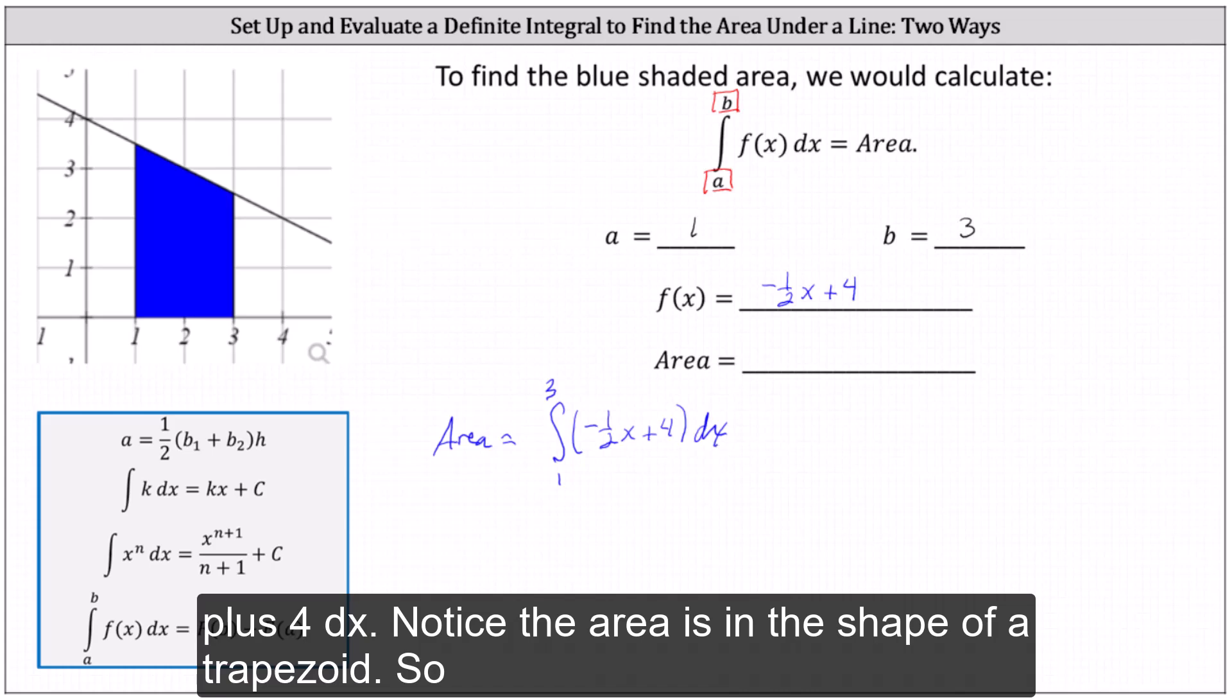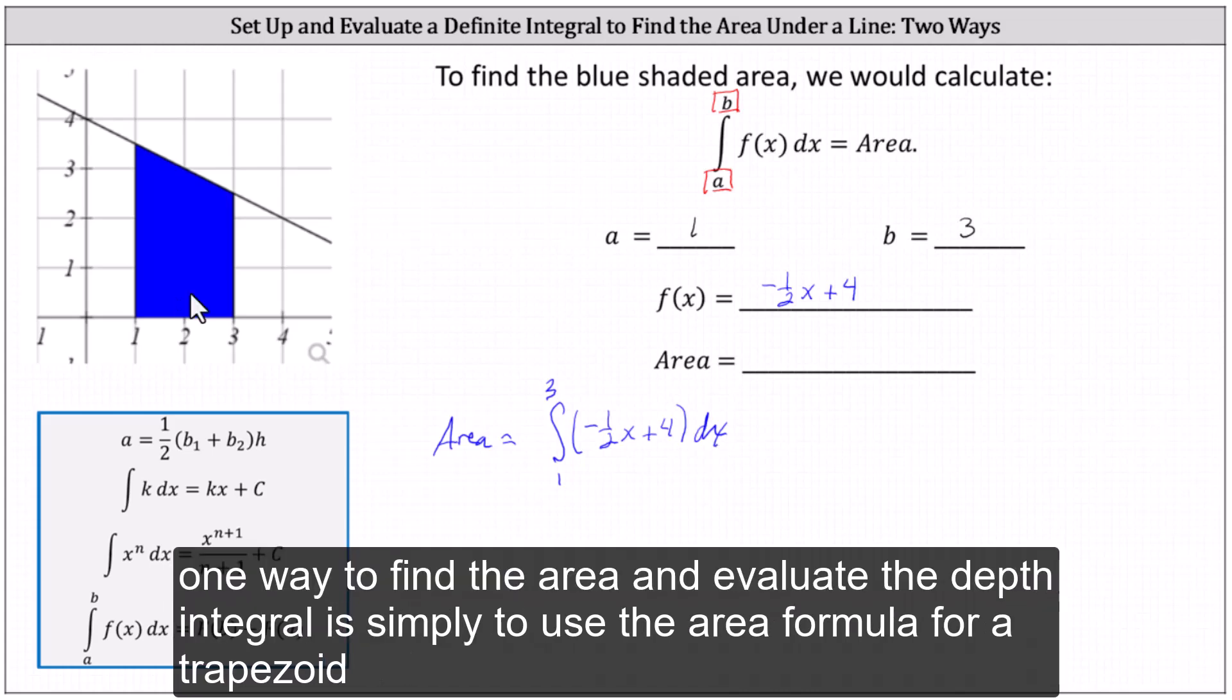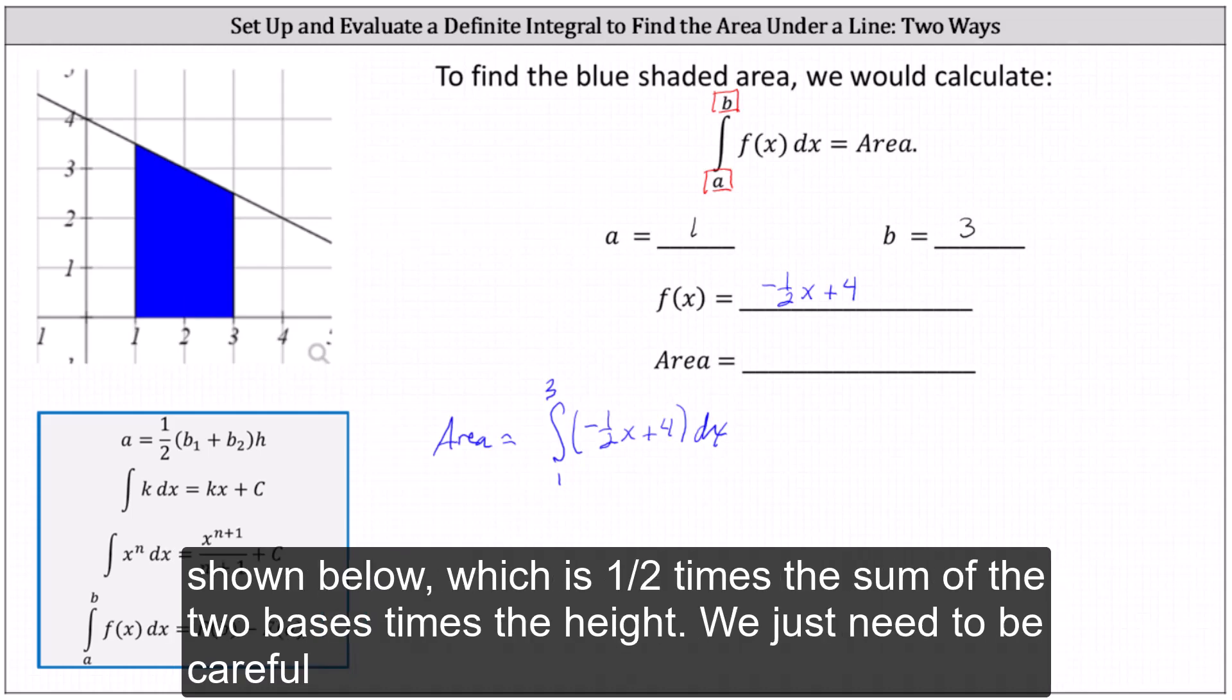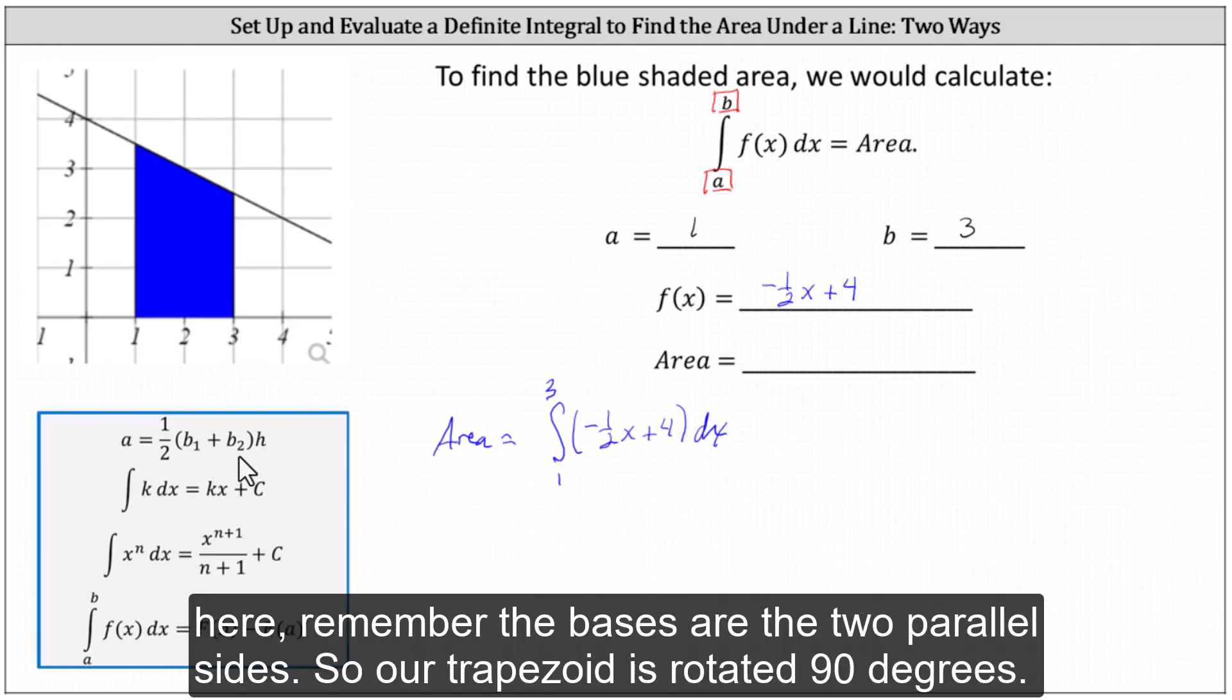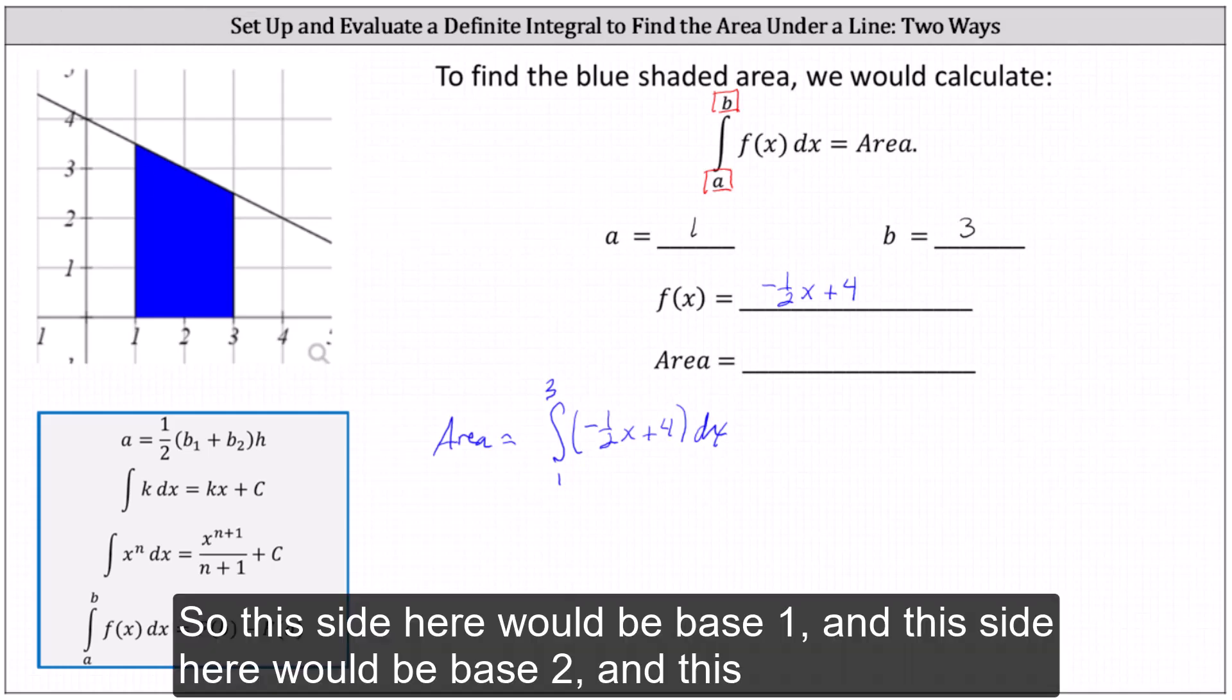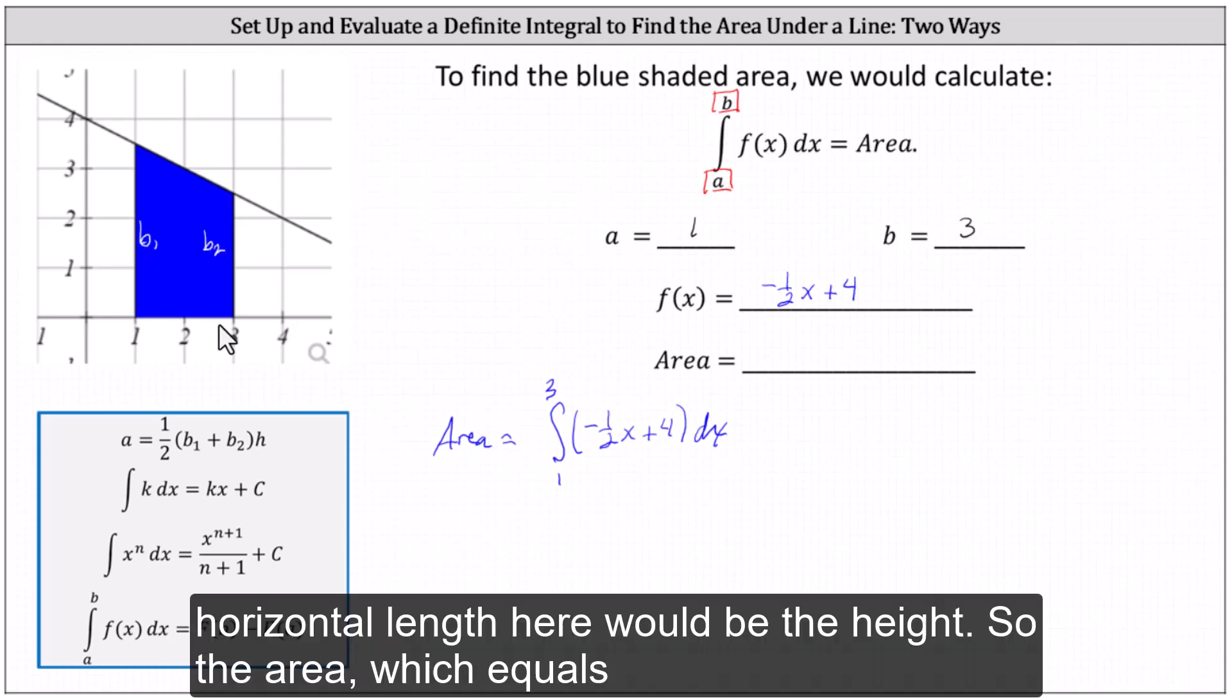Notice the area is in the shape of a trapezoid. So one way to find the area and evaluate the definite integral is simply to use the area formula for a trapezoid shown below, which is one-half times the sum of the two bases times the height. We just need to be careful here. Remember, the bases are the two parallel sides. So our trapezoid is rotated 90 degrees. So this side here would be base one, and this side here would be base two, and this horizontal length here would be the height.